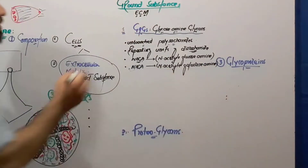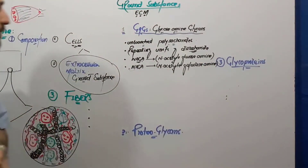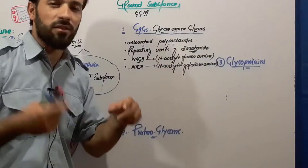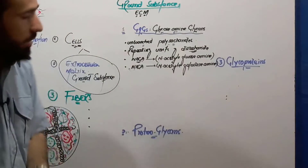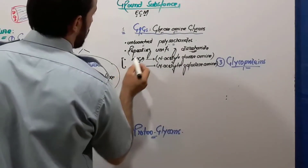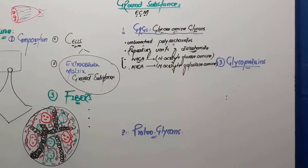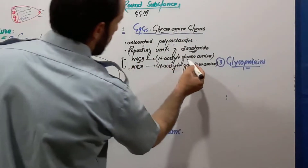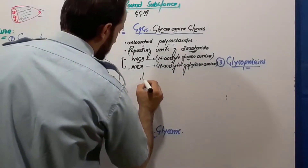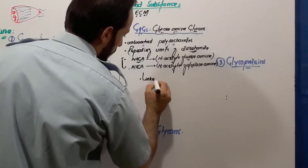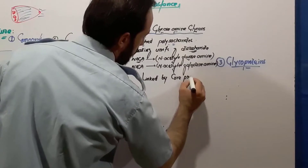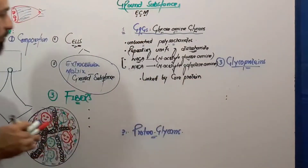These two disaccharides are repeated many times, so they make polymers which are called polysaccharides. These polysaccharides are connected to a core protein. The disaccharide units repeated in glycosaminoglycans or GAGs are N-acetylglucosamine and N-acetylgalactosamine, and these are linked by a core protein — a central protein molecule.